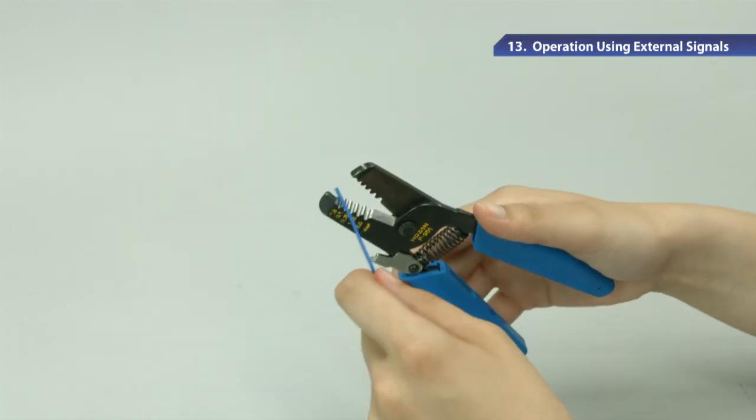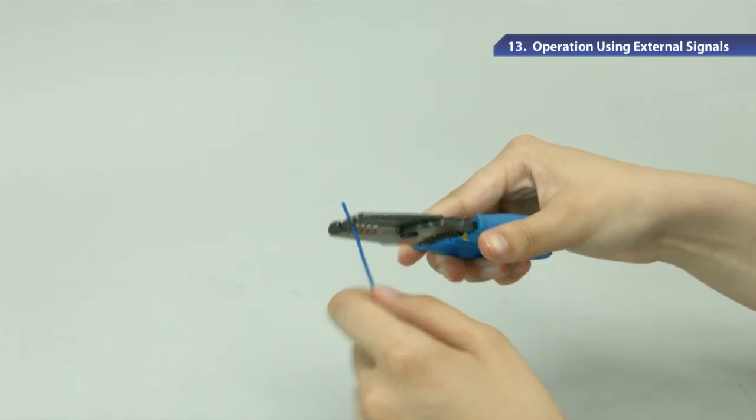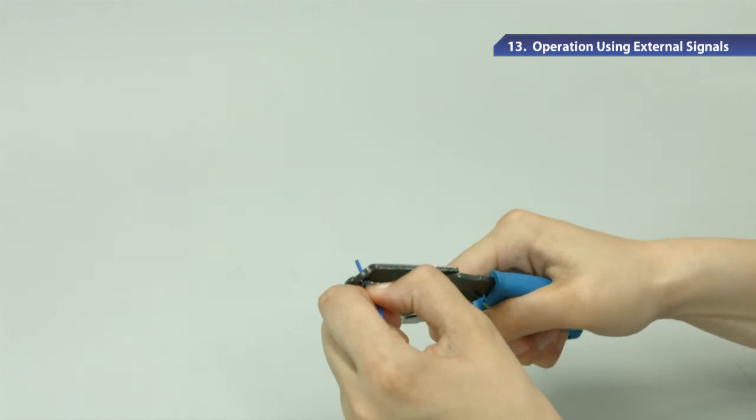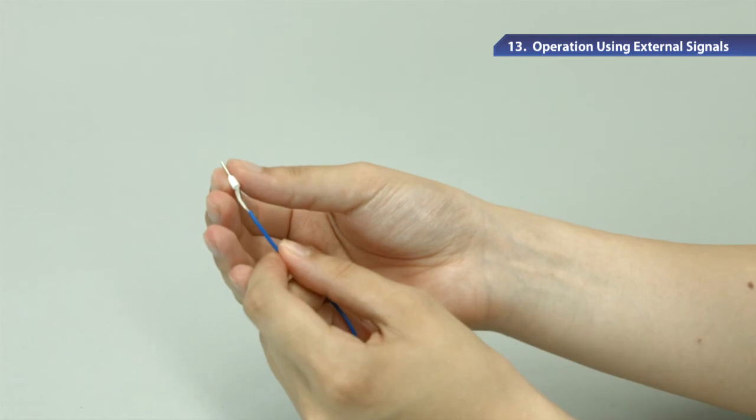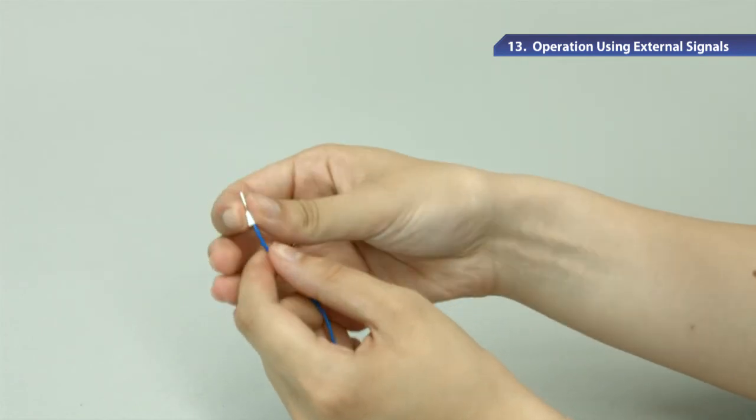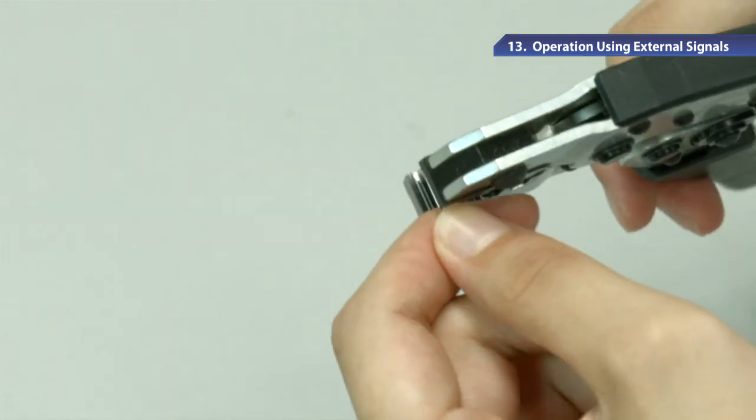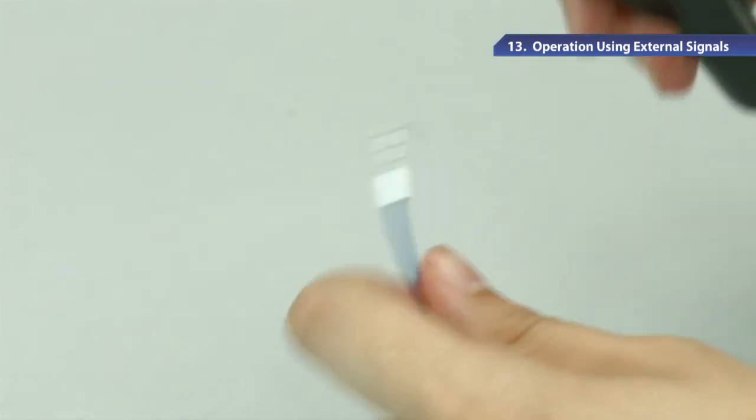Now I'm going to show you how to use the blade terminal. First, strip off about 10mm of the wire at the end. Insert the stripped part of the cable into the terminal and crimp the blade terminal onto the wire with a special tool.